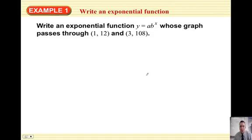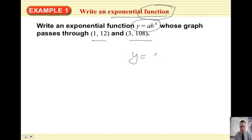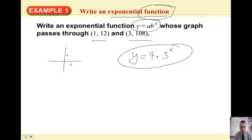Alright, example one. You know how to write an exponential function when you're given two coordinates. Plug those into y equals a, b to the x power, and we got y equals 4 times 3 to the x. You found the exponential function that goes through those two points. So if you had 1 comma 12 and 3 comma 108, you found that particular function for it.